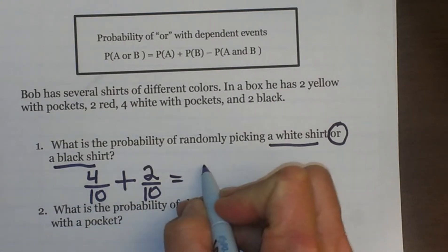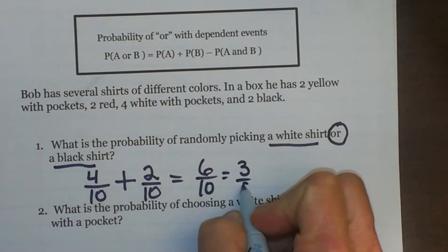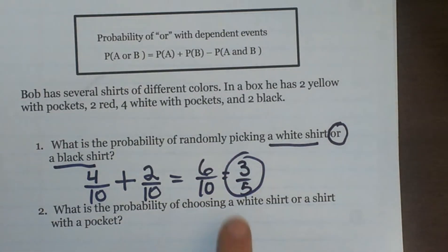So I am just going to add my probabilities together and I get six tenths or three fifths. So that is my probability of choosing a white shirt or a black shirt.